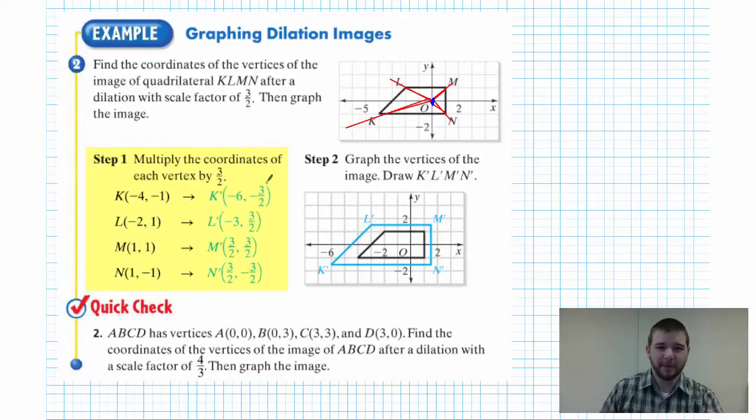Step one tells us to multiply the coordinates of each vertex by three halves. That makes sense. So we'll multiply our x coordinate by three halves, in this case to get from -4 to -6, and then our y coordinate as well by three halves to get from -1 to -3/2, and repeat that process for vertex L.